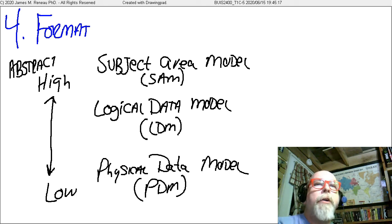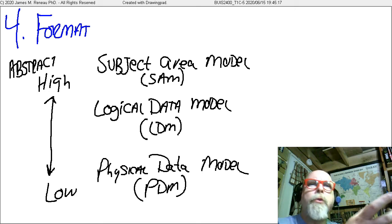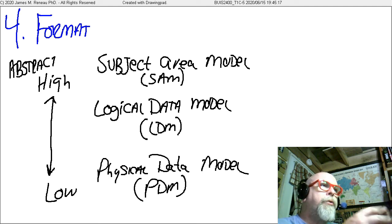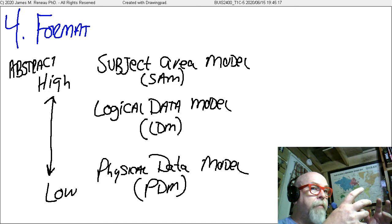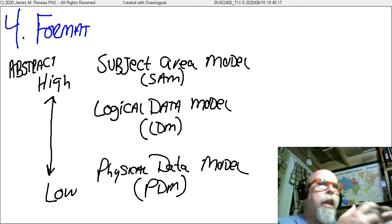Once you get your subject area model pretty well the way you want it, we create something called a logical data model. And a logical data model goes into the relationships have to be actually creatable. There are rules about certain kinds of relationships have to be modified. But a logical data model goes through and gets all of the logic of the data model to work. So the subject area model looks at the subject of the model. The logical data model looks at all the logic of the model to make sure that the model is logically sound and can be created.